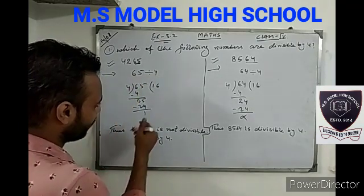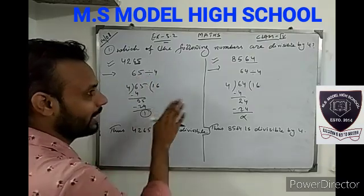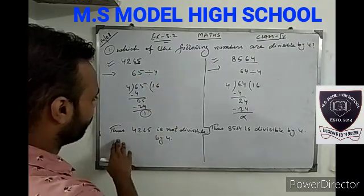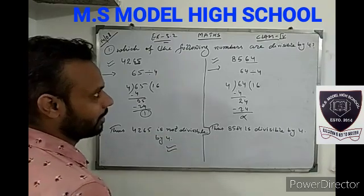If you divide it by 4, it means that the number is not divisible by 4. This means that 4265 is not divisible by 4. This is your answer.